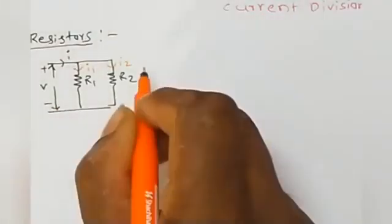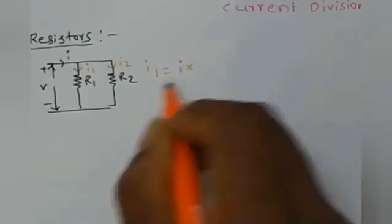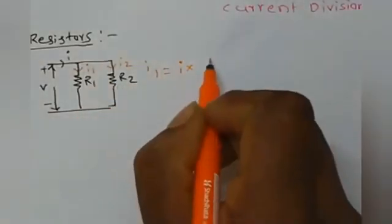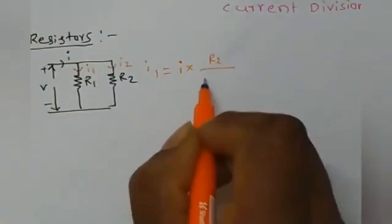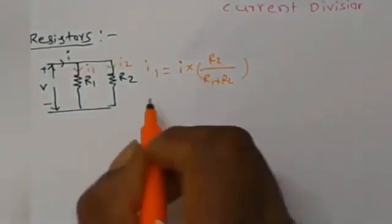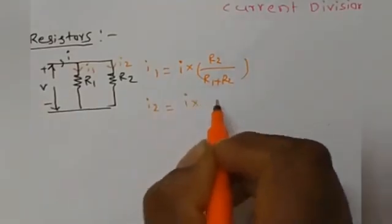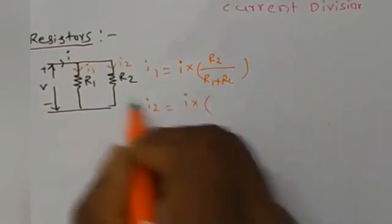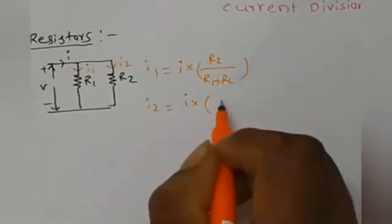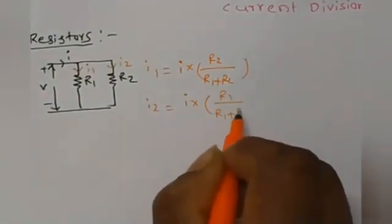We want to find out I1 and I2 using the current division rule. I1 equals total current I multiplied by the opposite resistance R2, divided by the total resistance R1 plus R2. Similarly, I2 equals total current I multiplied by the opposite resistance R1, divided by R1 plus R2.